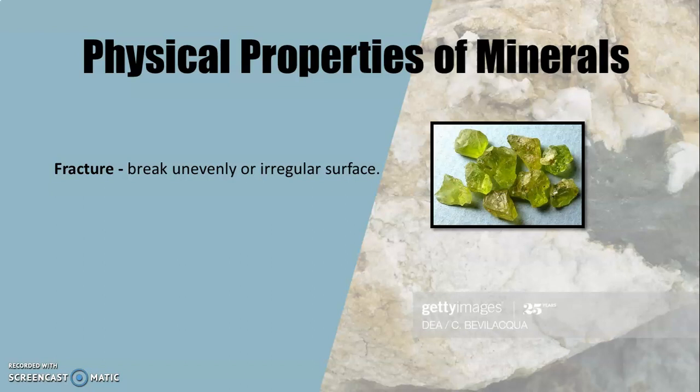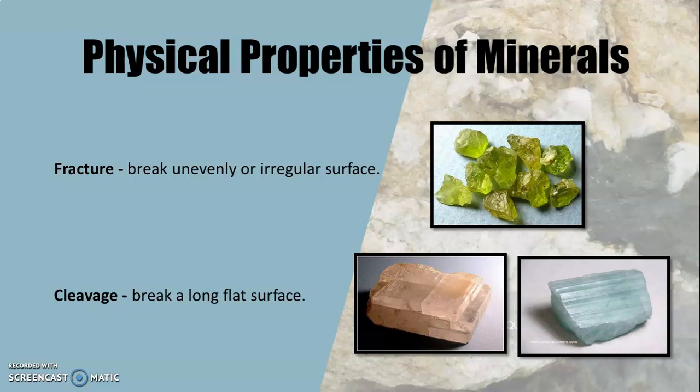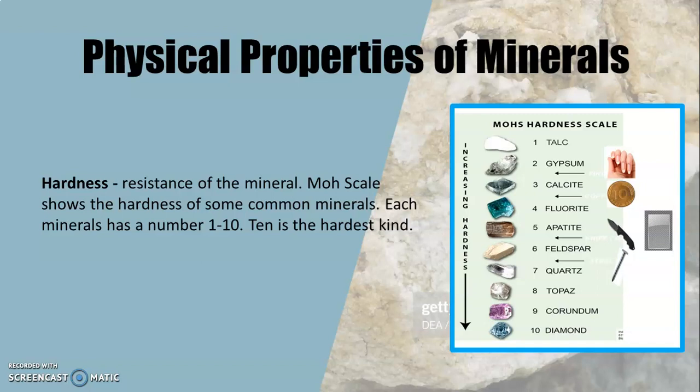Fracture is the tendency of minerals to break along an uneven or irregular surface. Cleavage is the tendency of minerals to break along a flat surface. Hardness is the resistance of minerals. To manually test how hard a mineral is, we scratch it using materials like an iron nail, copper coin, knife, glass slide, or even our fingernails, and rate the resistance from 1 to 10 using the Mohs hardness scale.